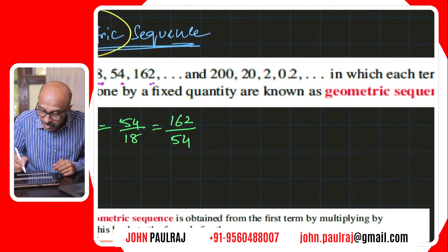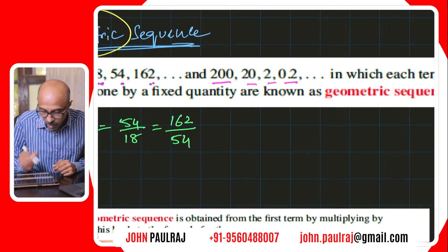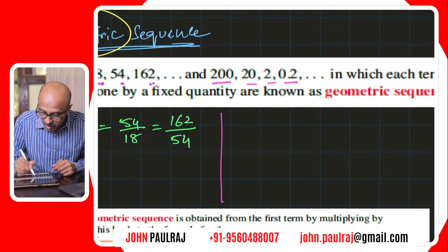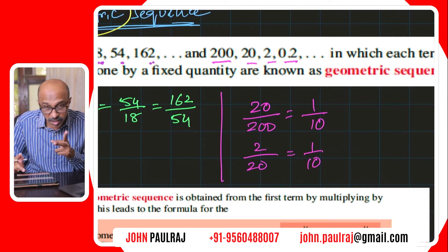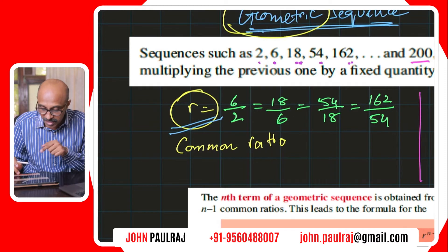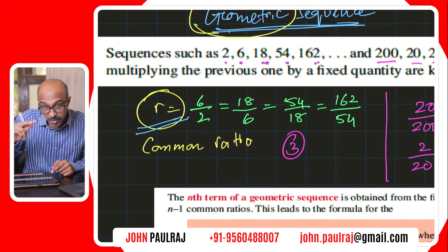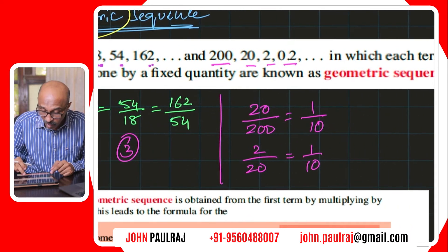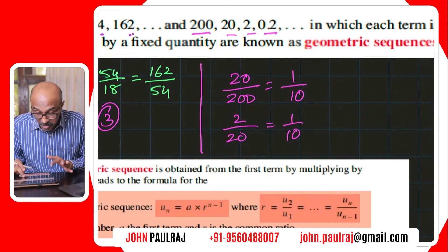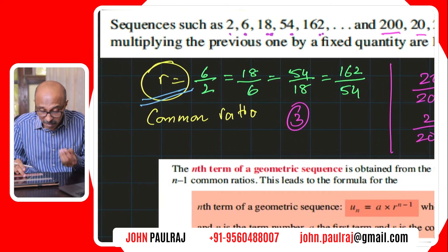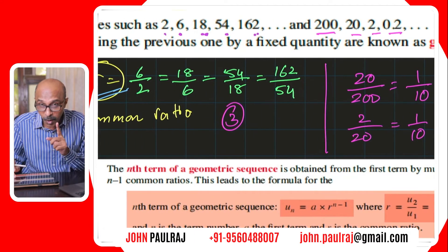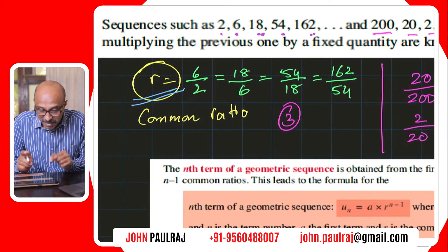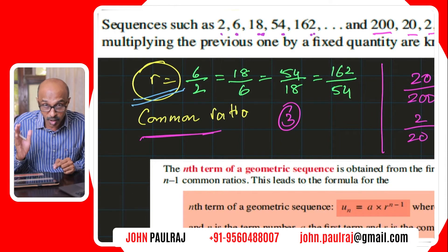Consider this sequence: 200, 20, 2, 0.5. If you compare 20 divided by 200, that's 1/10. What about 2 divided by 20? That's again 1/10. So the common ratio need not be an integer value. In the earlier example the common ratio was 3 — an integer — and here we've got the common ratio as the fraction 1 over 10. The common ratio can also be a negative number. As long as the ratio of consecutive terms is the same, it's a common ratio and we call it a geometric sequence.